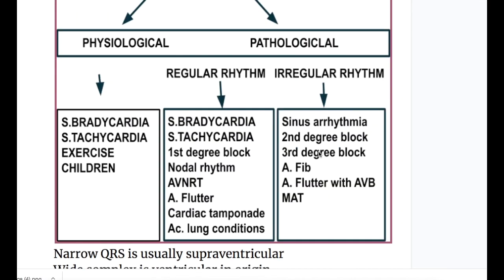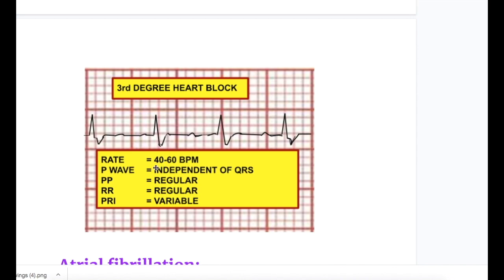Next is third degree heart block. In third degree heart block the heart rate is slow — 40 to 60 beats per minute. P waves are independent of QRS complexes. The PP interval is regular and the RR interval is also regular, but the PR interval is variable.